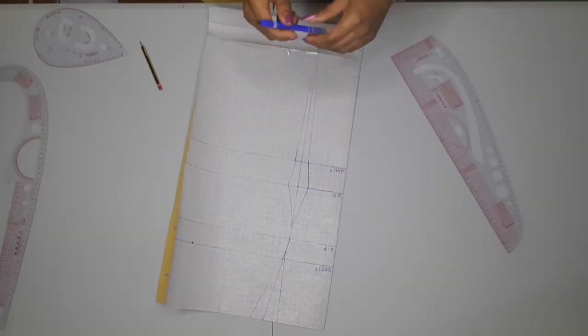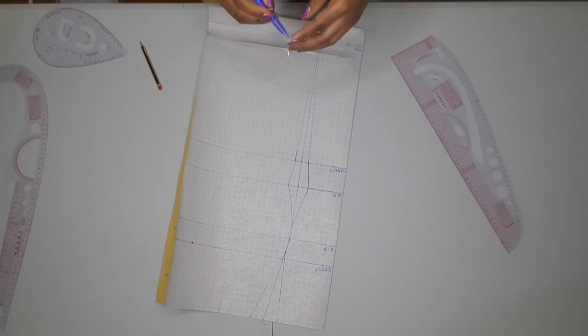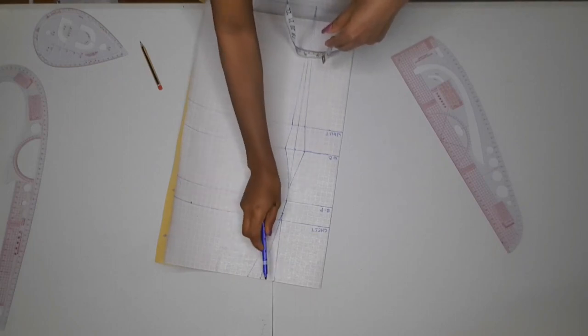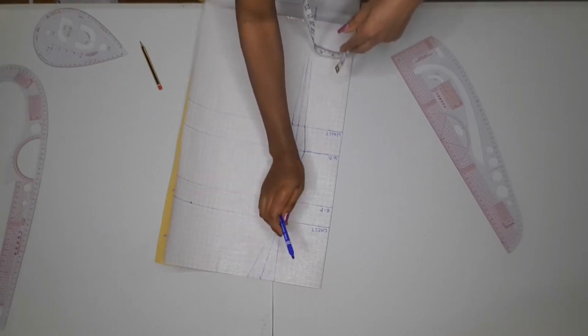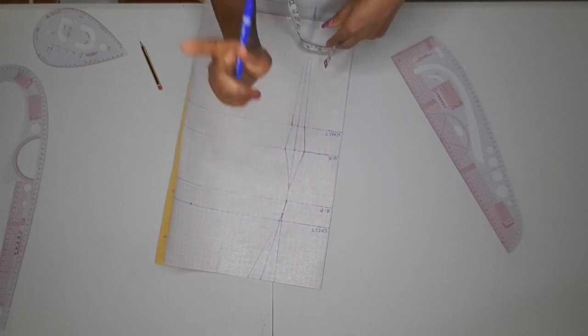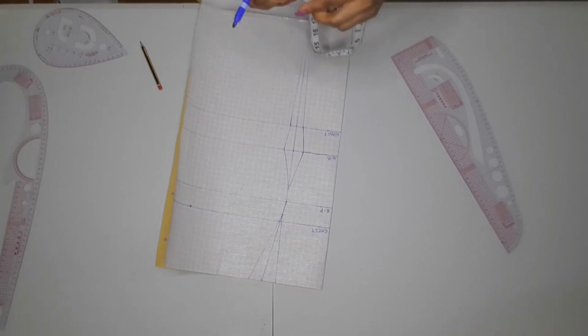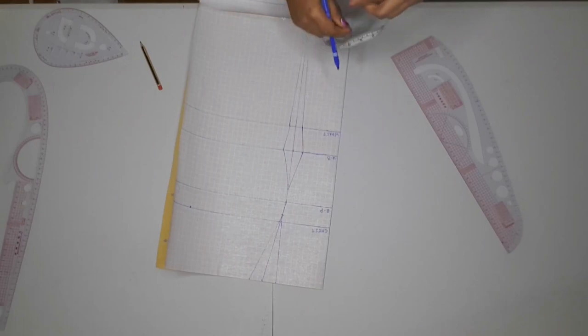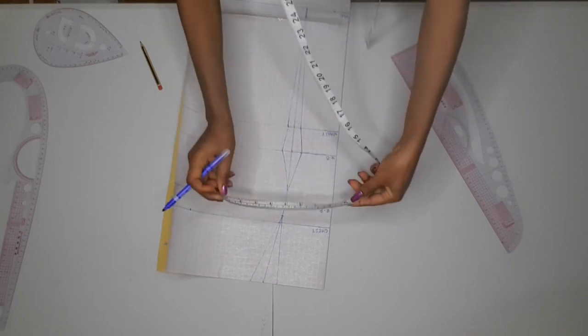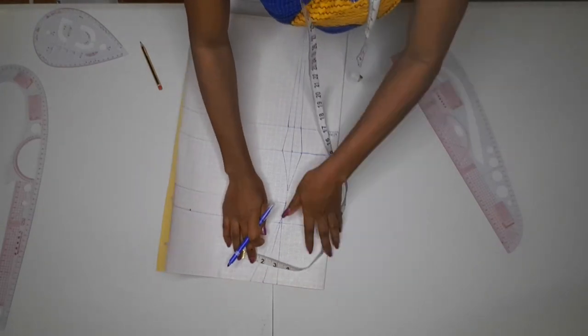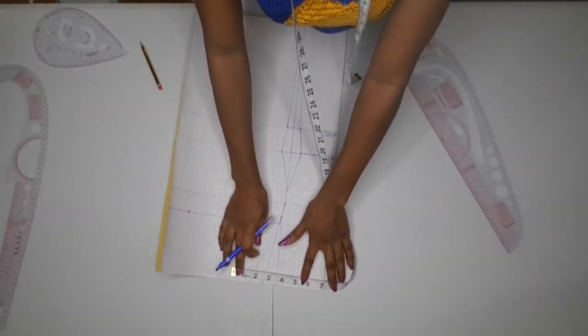Now it's time to transfer horizontal measurements. Whatever measurement you take out for the dart, you have to return it. I'm starting by transferring my neck width. I'm going to be taking the neck width of 4.5, adding 2 inches of dart, plus half inch sewing allowance. 4.5 plus half inch plus 2 gives me 7, so I'm marking 7 inches.